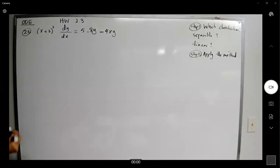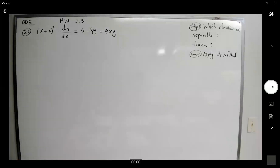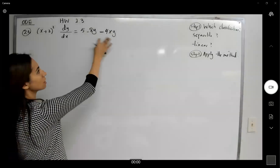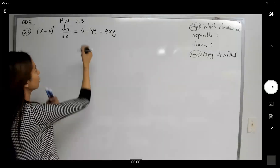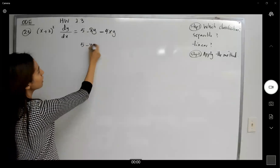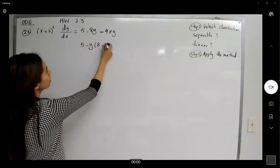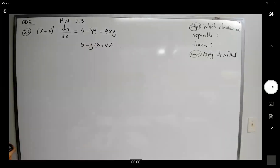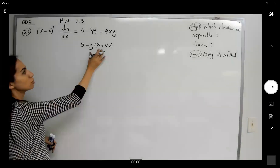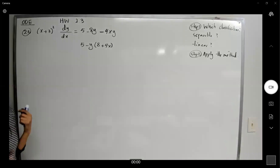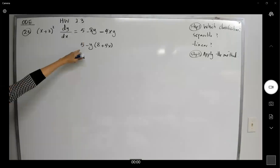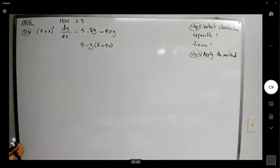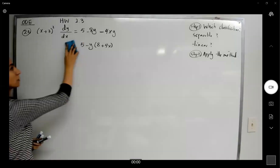We're going to try to solve this. The very first thing you should be asking: is it separable? Can we separate these? It seems like you cannot separate these two. Why is that? Here you have three terms. If you factor out y, you end up with negative (8 plus 4x). If you bring 5 to the other side and do the division, you're going to see multiplication between these two — there is no way to separate them. If there was no 5, you'd be able to separate them. But this 5 makes it impossible. So it is not separable.